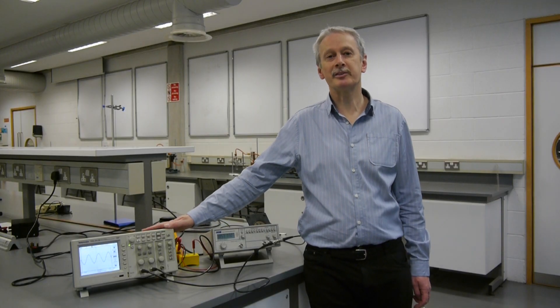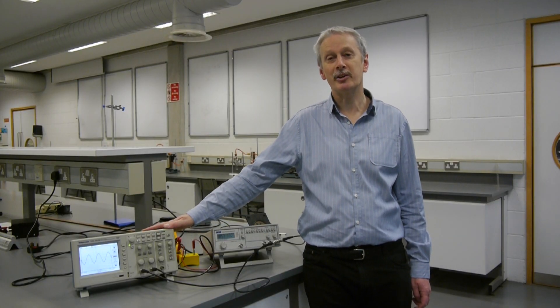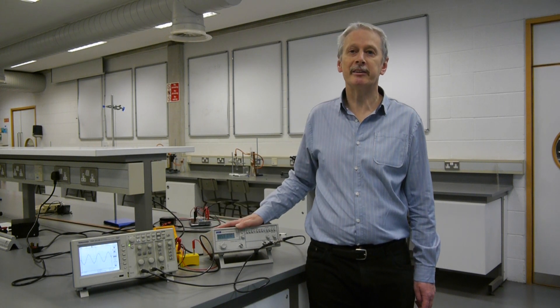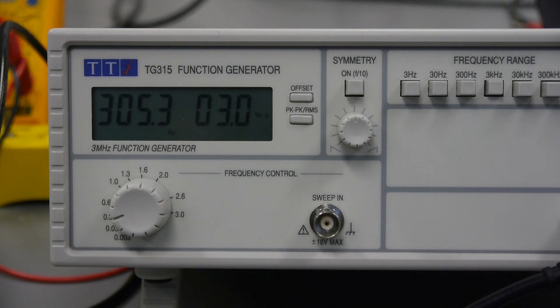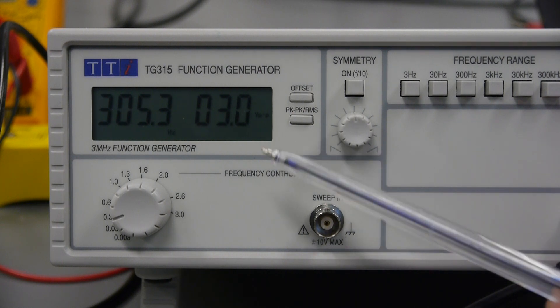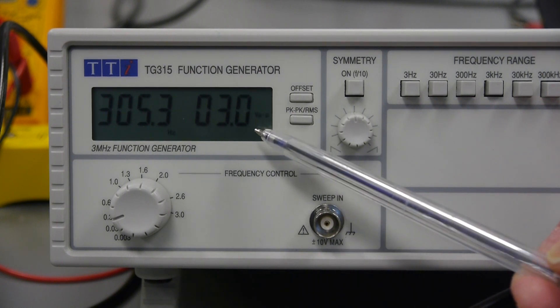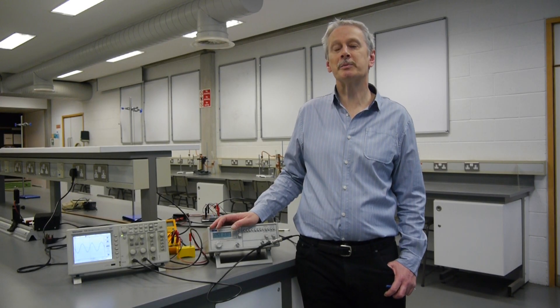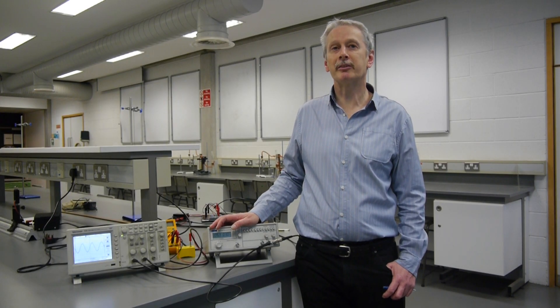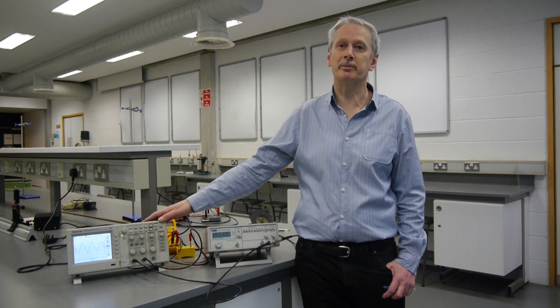Now we saw that our oscilloscope measures the peak-to-peak value as 30 volts, but our signal generator also tells us the peak-to-peak value it's putting out. But looking at the display, it's telling us it's just putting out 3 volts peak-to-peak, not the 30 volts the oscilloscope is telling us. The reason for the difference between the two readings is that we've not correctly set one of the side menu buttons on the oscilloscope.